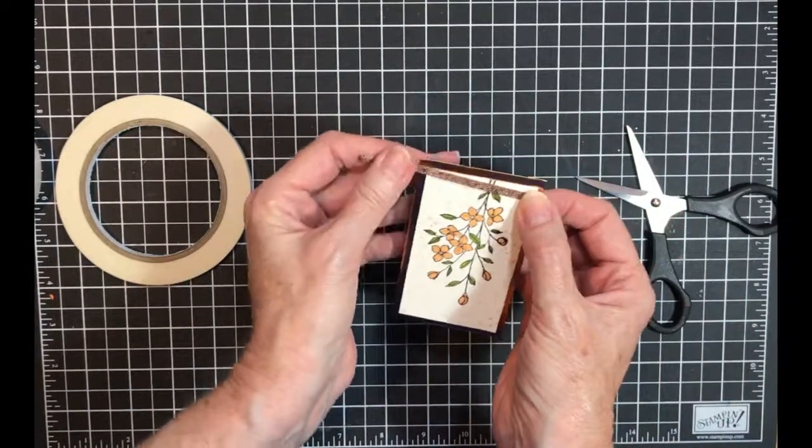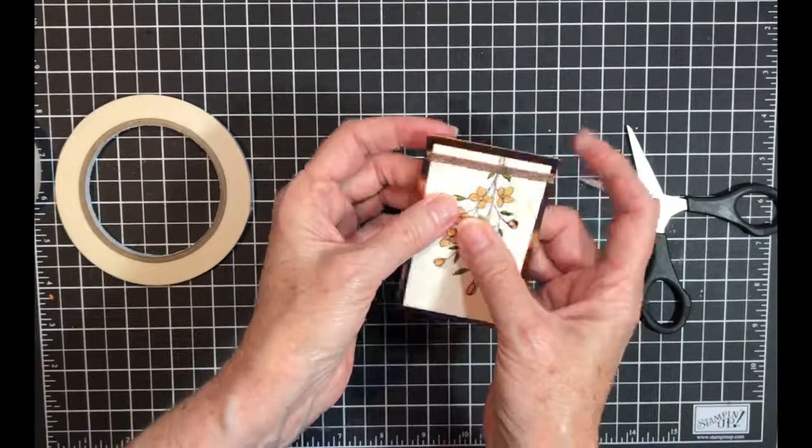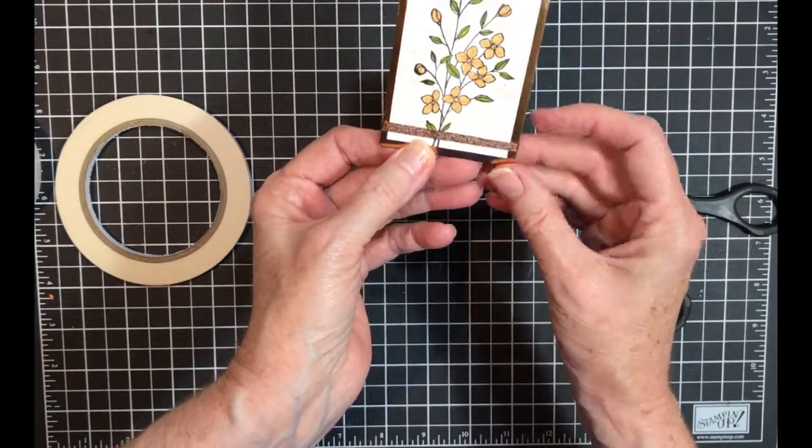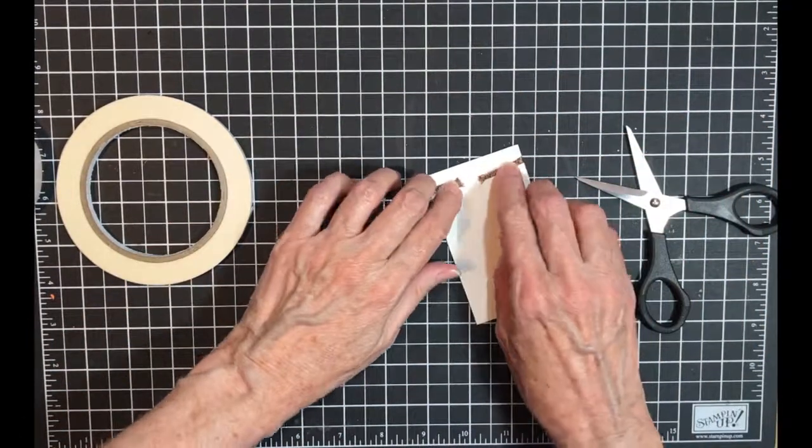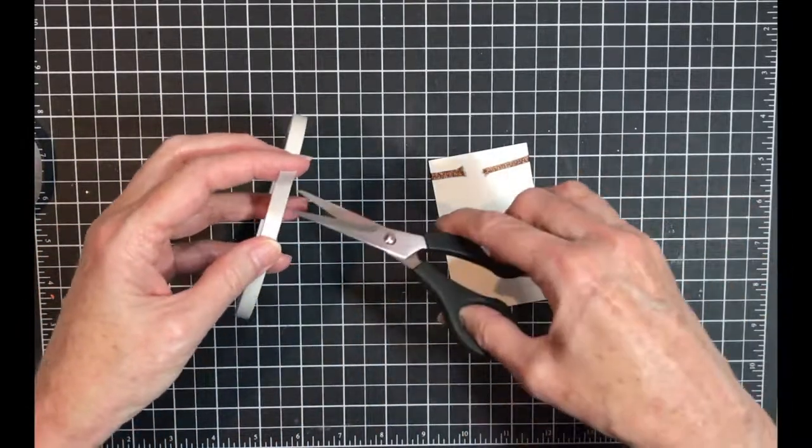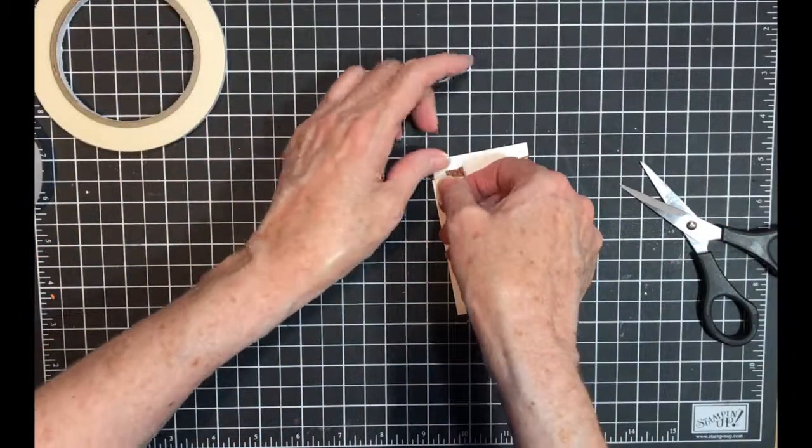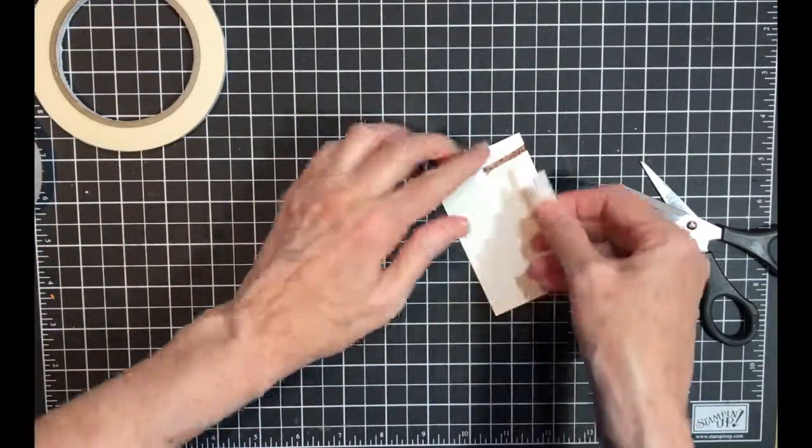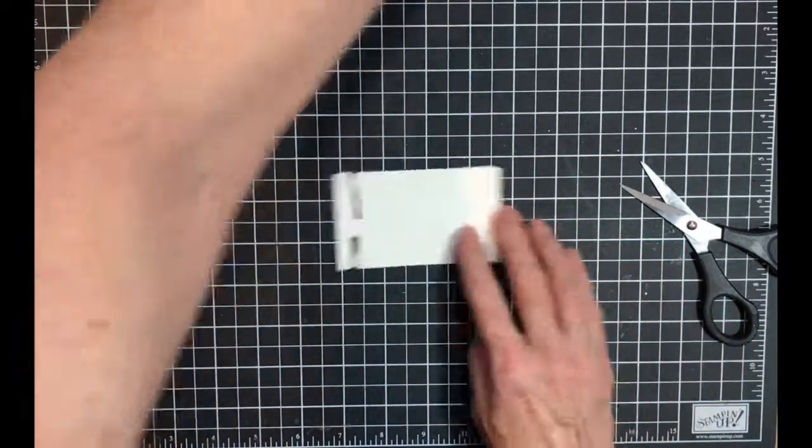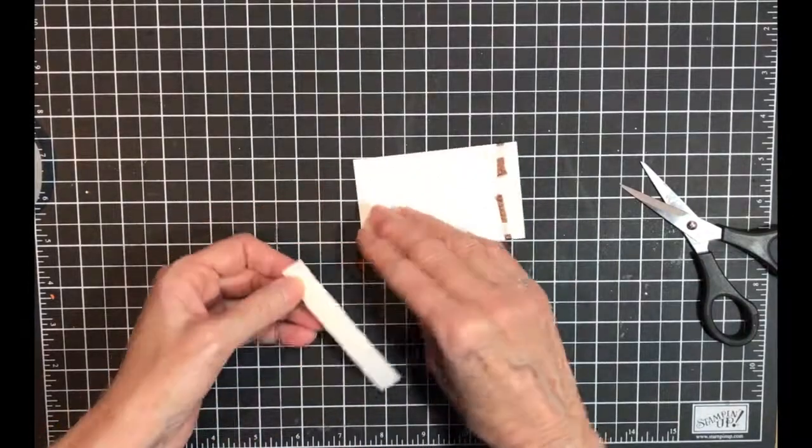And I'm going to put this right across the bottom like so. And you have to be careful with this copper foil ribbon, it likes to bend on you and it can not be straight. I'm gonna put that over there and now I'm going to get my dimensionals because I'm going to put dimensionals on the back of this.